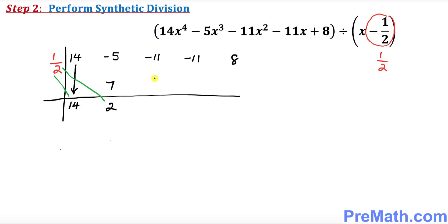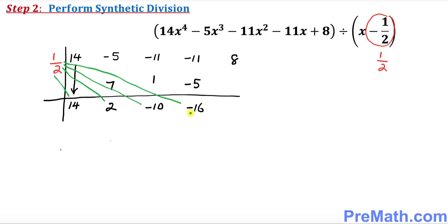Negative 11 and 1 gives negative 10. Multiply 1 over 2 times negative 10 — that gives negative 5. Negative 5 and negative 11 gives negative 16. Finally, multiply 1 over 2 times negative 16 — that gives negative 8. And 8 plus negative 8 gives 0, so the remainder is 0.